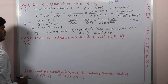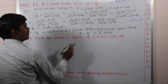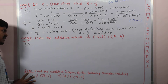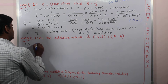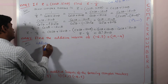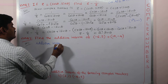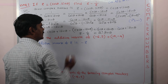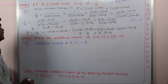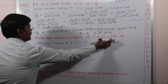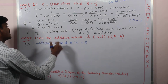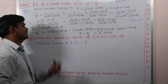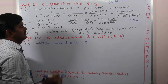Now let us see the second question. Find the additive inverse of minus 6 comma 5 plus 10 comma minus 4. Let us recall the additive inverse formula. The additive inverse of z is known as minus z. So if z is in the form of a plus iota b, we can write its additive inverse as minus a minus iota b.